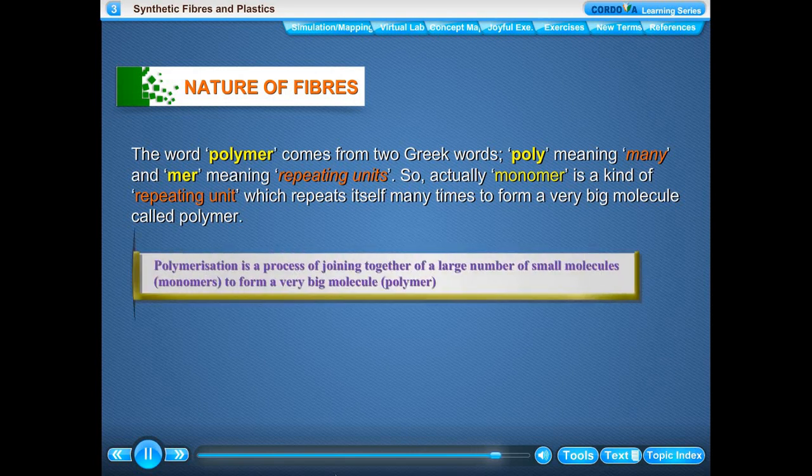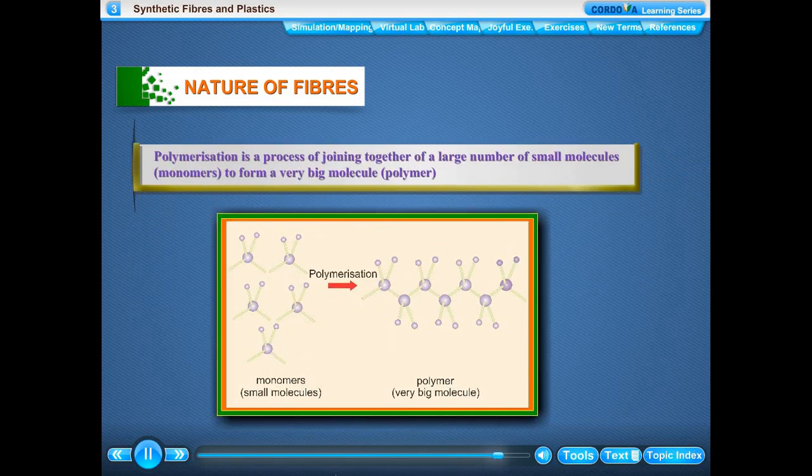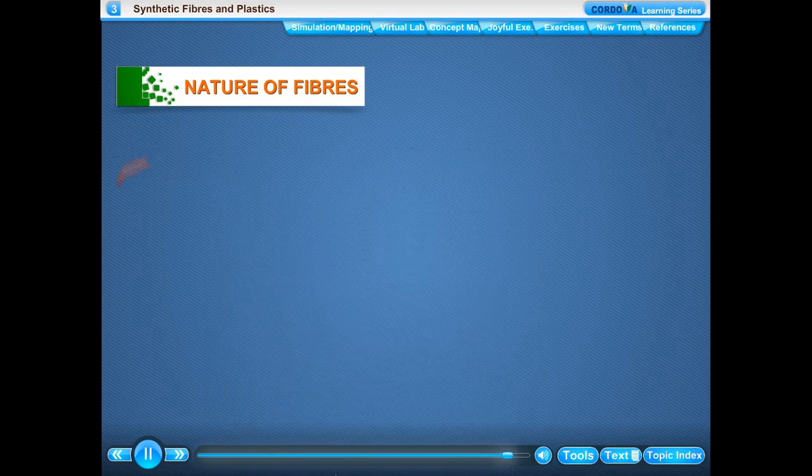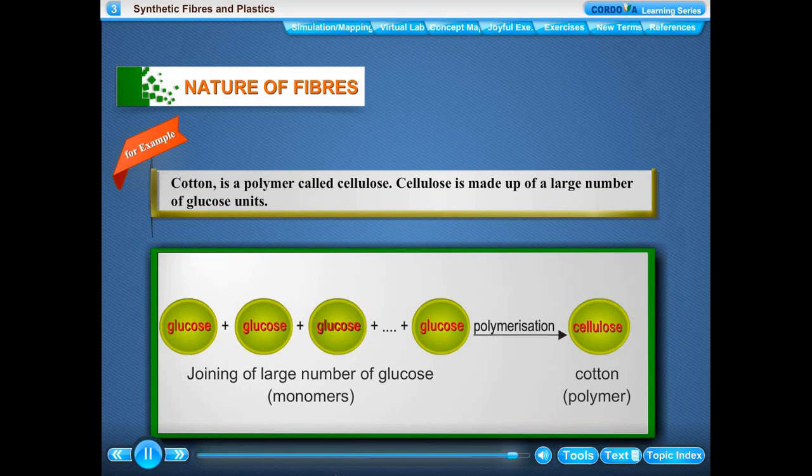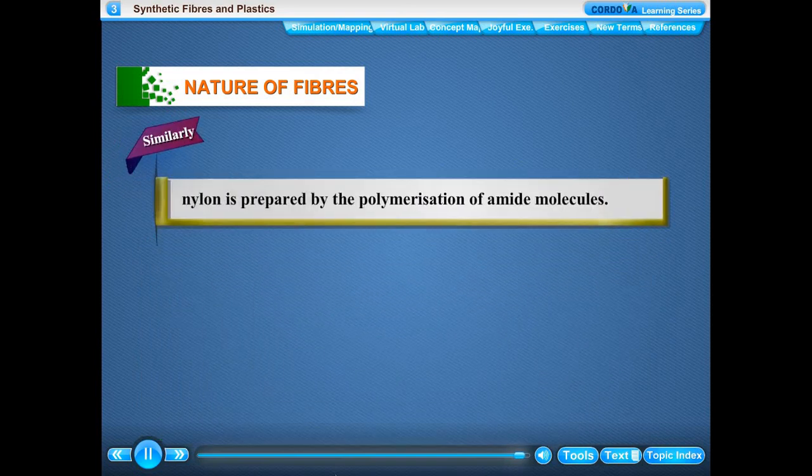Polymerization is a process of joining together a large number of small molecules (monomers) to form a very big molecule (polymer). Cotton, for example, is a polymer called cellulose. Cellulose is made up of a large number of glucose units. Similarly, nylon is prepared by polymerization.